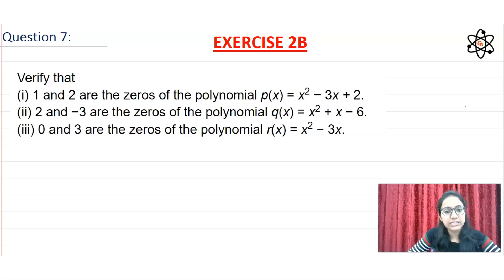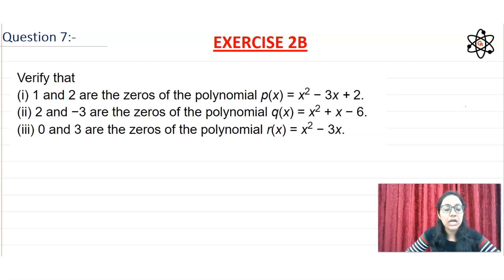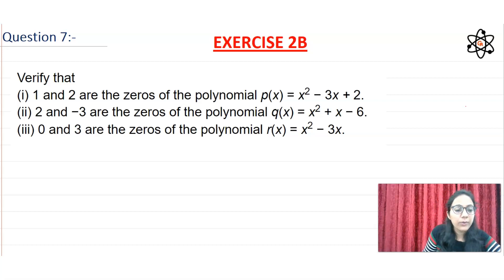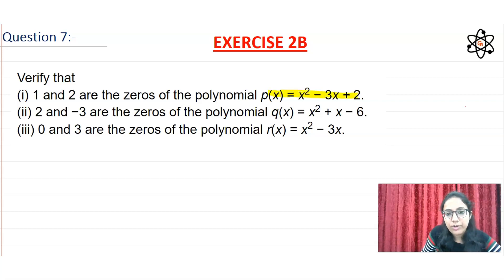Friends, let's start with Exercise 2B, question number 7. If you haven't seen previous questions, you can see them in the playlist. Question number 7: Verify that 1 and 2 are the zeros of the polynomial P(x) = x² - 3x + 2.